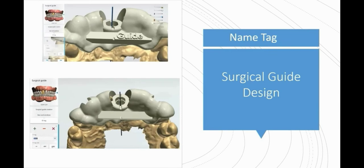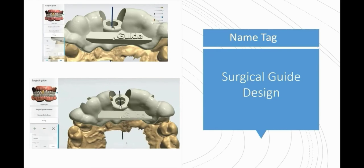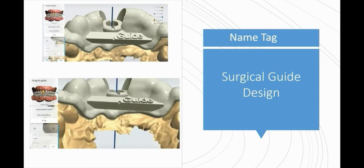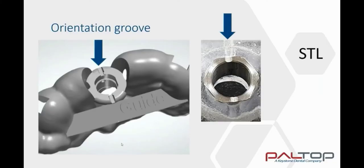Finally, click on the ID tag. You may add either a numerical or alphabetical name tag. Adjust the font size with the font tabs. This stage must be completed prior to final approval of the surgical guide. Note that the orientation groove in the sleeve housing is now an automatic function of 3Shape and will assist with the correct insertion of the guide sleeve after guide manufacture.